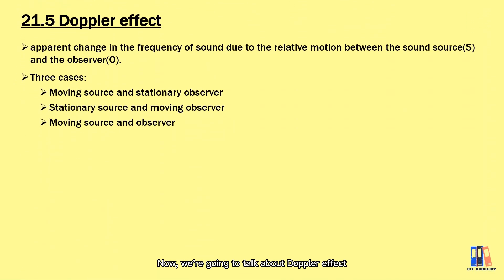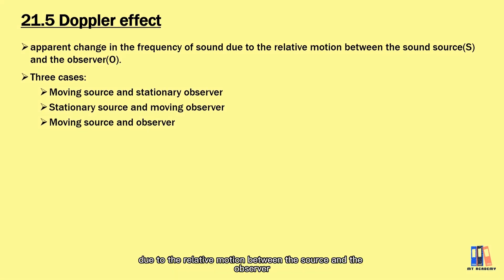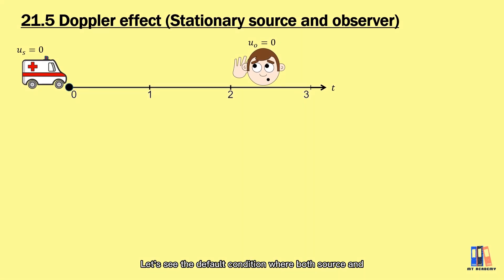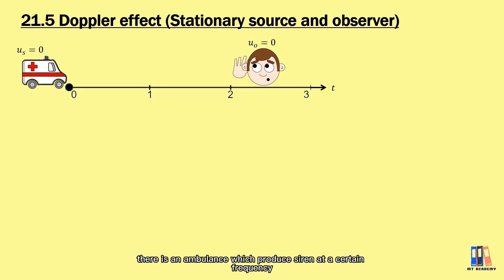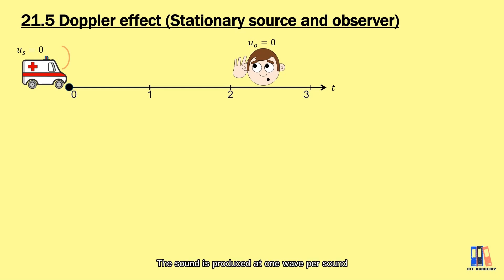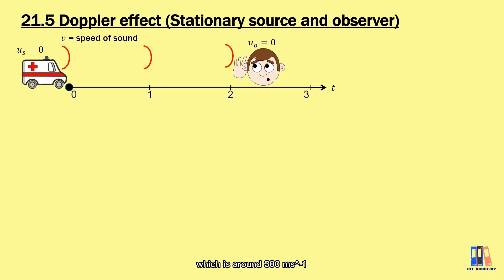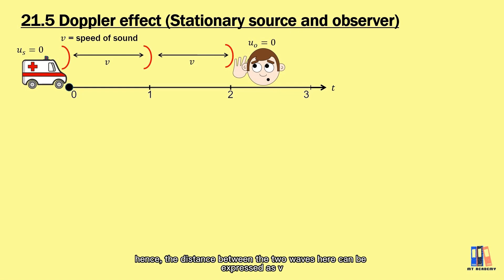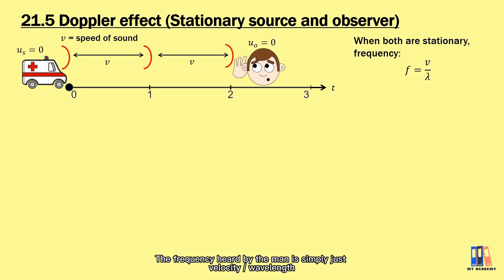Now let's talk about the Doppler effect — the apparent change in frequency of sound due to relative motion between the source and the observer. There are three cases. In the default condition where both source and observer are stationary, an ambulance produces a siren at 1 Hz. The sound travels at approximately 300 m/s. The wavelength — the distance between two consecutive waves — can be expressed as v, and the frequency heard by the observer is simply v over lambda.